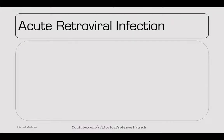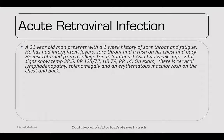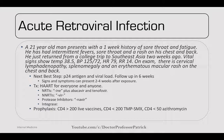Going through acute retroviral infections: a 21-year-old presents with a one-week history of sore throat and fatigue, intermittent fevers, and a rash on his chest and back. He just returned from a college trip to Southeast Asia two weeks ago. Vitals show a temperature of 38.5, BP 125/72, HR 79, RR 14. On exam, there is cervical lymphadenopathy, splenomegaly, and an erythematous macular rash on the chest and back. This is likely an acute retroviral infection, occurring two to four weeks after exposure. The next best step is a P24 antigen and viral load. You can follow up in six weeks, as it may be negative initially because it's too acute.